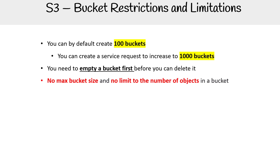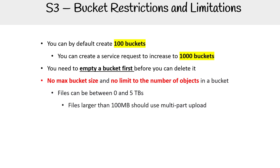There are limitations based on some things. Files can be between zero and five terabytes. I want to emphasize that you can have a zero byte file, and you can have a file as large as five terabytes. Files that are larger than 100 megabytes — it's recommended to use multipart upload, which we definitely show in this course, and the CLI makes it pretty easy to do.